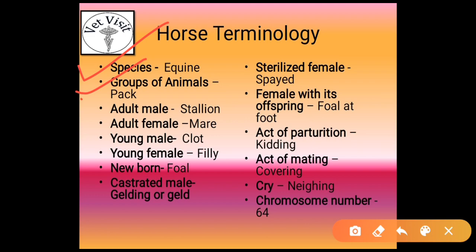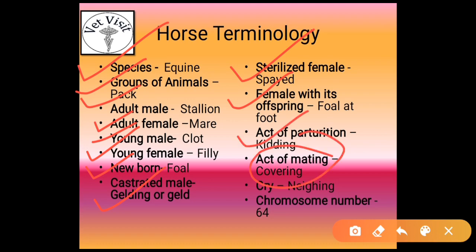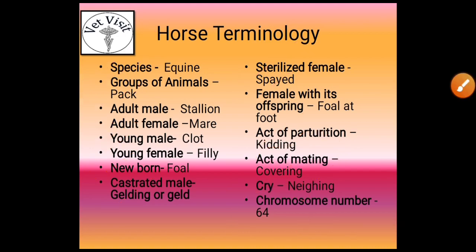For horse, the species is equine. A group of horses is known as a pack. Adult male is known as stallion. Adult female is known as mare. Young female is known as filly. Young male is known as colt. Castrated male of horse is known as gelding. Sterilized female of horse is known as spayed. Female with its offspring is known as foal at dares. Act of parturition in horse is known as foaling. Act of mating in horse is known as covering. Act of crying is known as neighing. Chromosome number is 64.